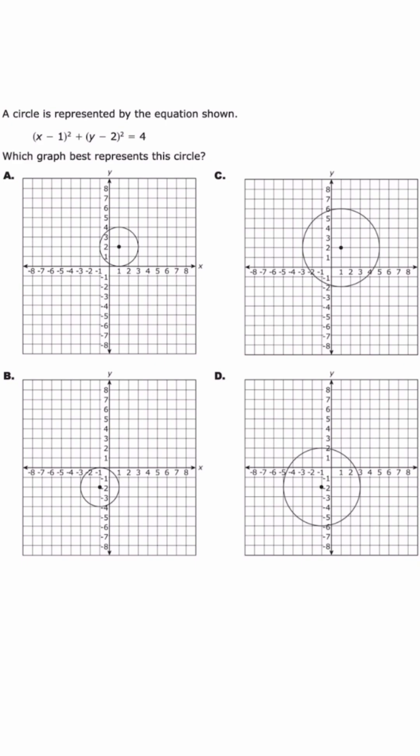Number one is the center of the circle. Based on the equation, the center of our circle is equal to positive one, positive two. So that means we're in quadrant one.